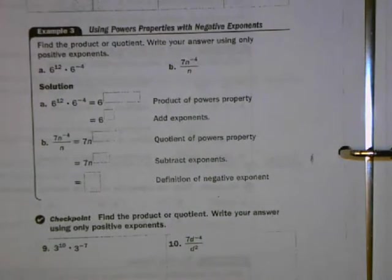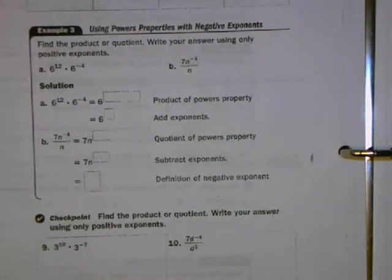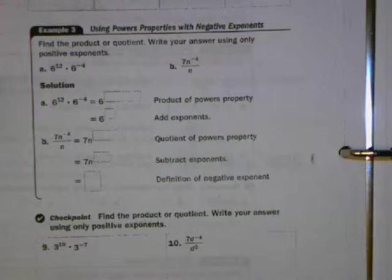Next, we're going to see if some of these rules that we learned, for example, if you're multiplying numbers together with the same base, you can add their exponents. Let's see if those rules still work when the exponents are negative.